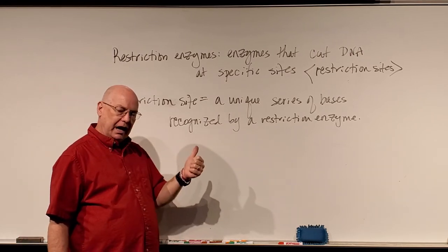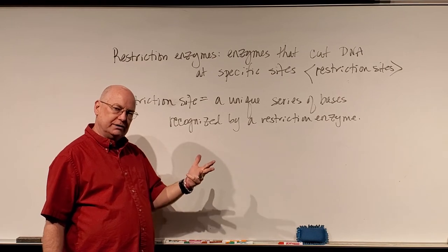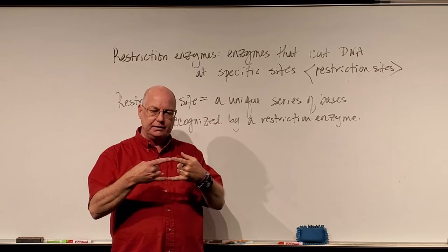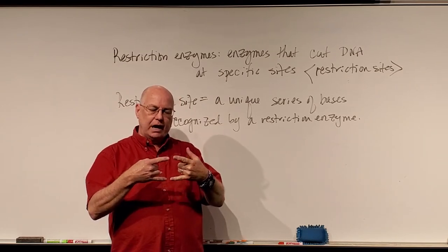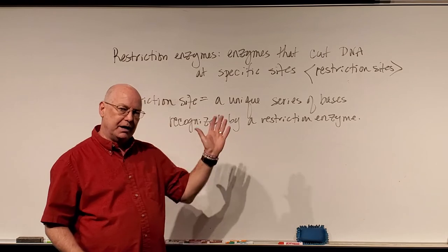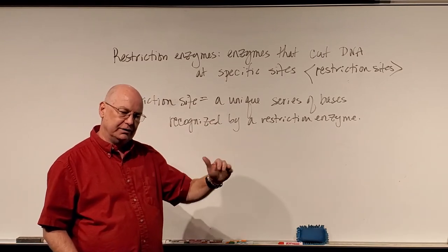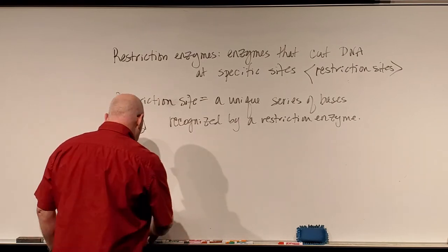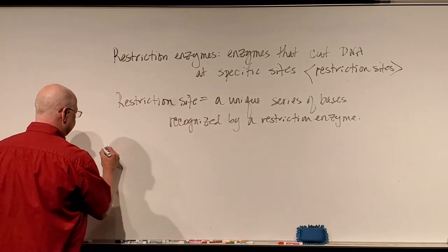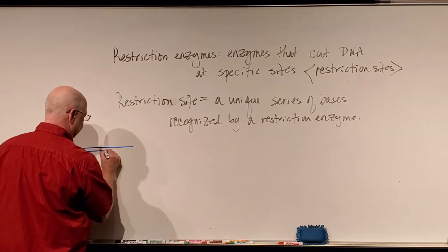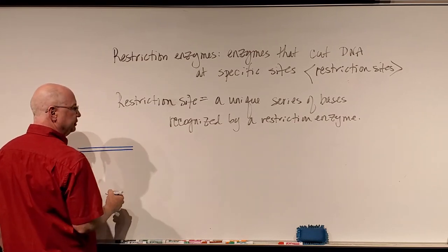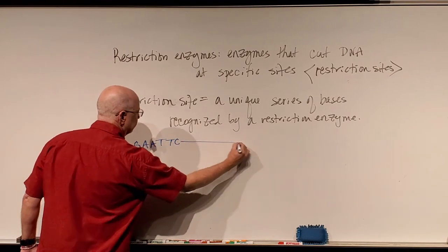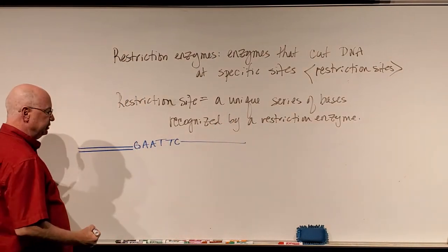Based on molecular structure, adenine and thymine bind together, and guanine and cytosine bind together — A binds to T, G binds to C. If I'm looking at a series of bases on a DNA strand and I get to a series that is G, A, A, T, T, C, then more bases — on the second DNA strand, using complementary base pairing, I would have C, T, T, A, A, G.